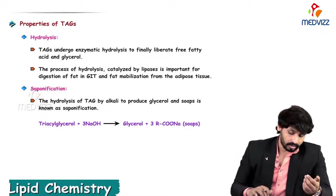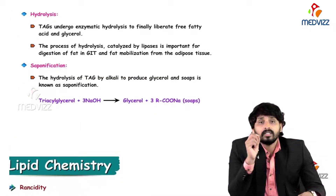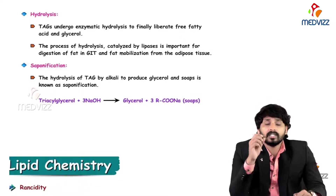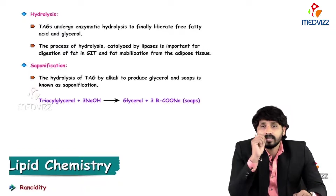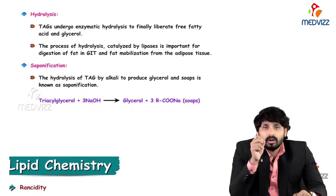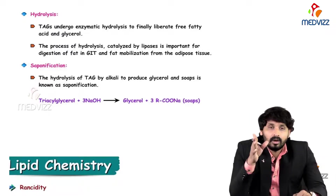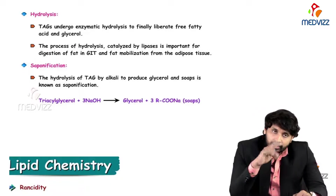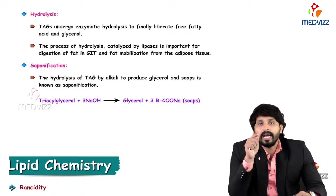Coming to saponification: saponification is the hydrolysis of TAG by alkali. When you add an alkaline substance to triacylglycerol, it produces glycerol and soaps - this is known as saponification. When you treat a triacylglycerol with alkali, it produces both soap and glycerol. This is the principle behind the making of soap.